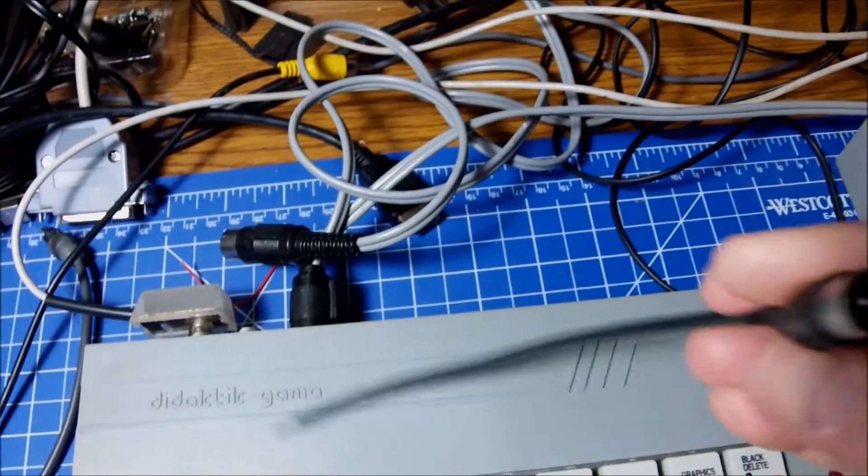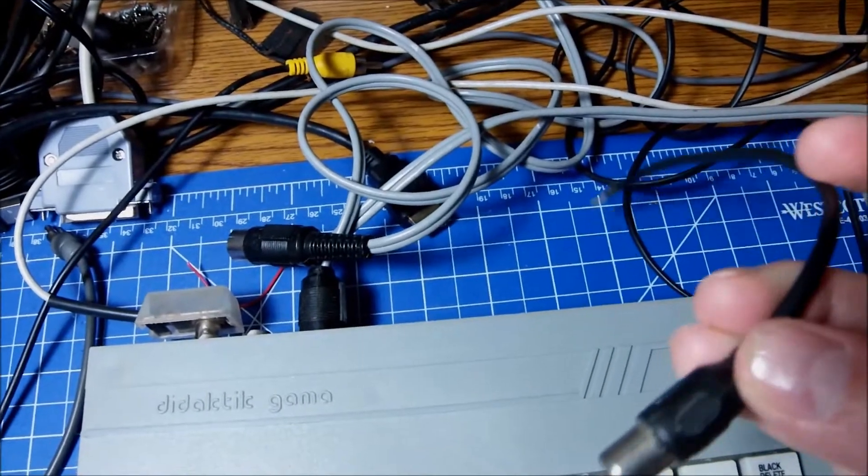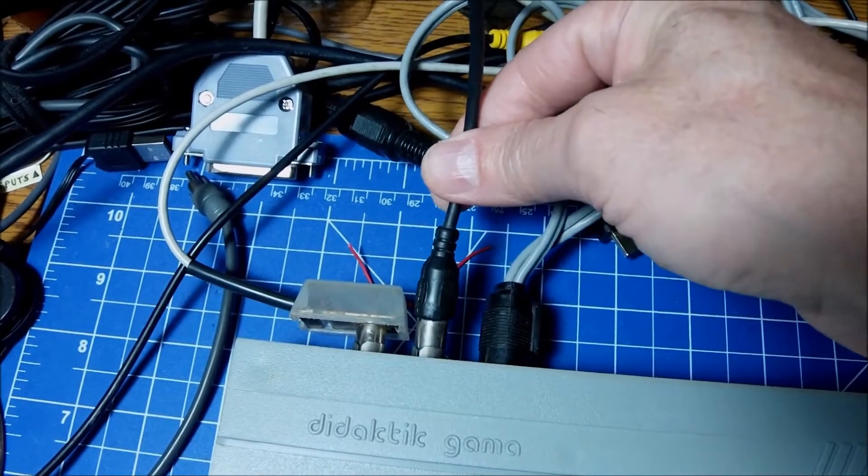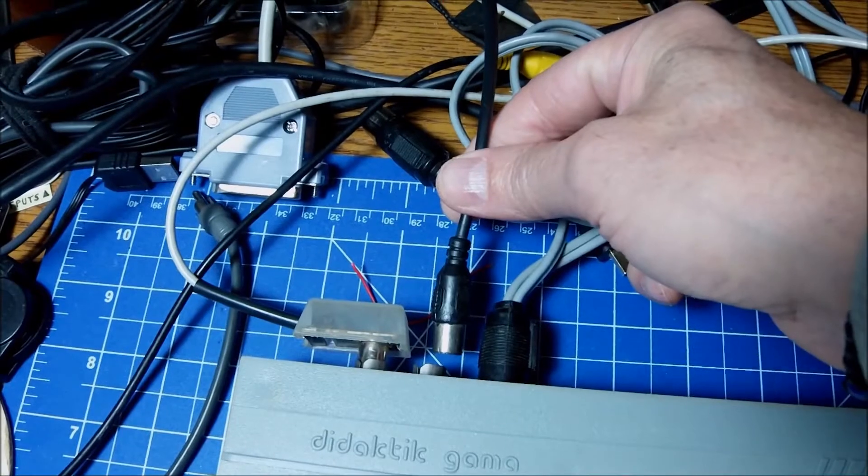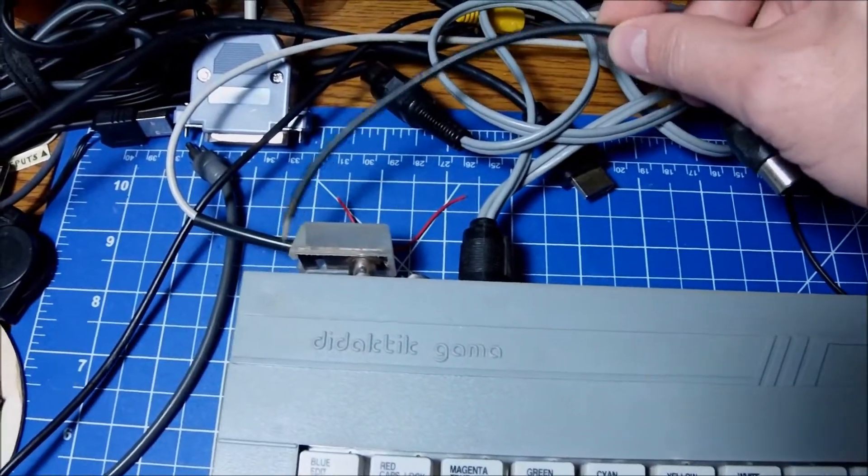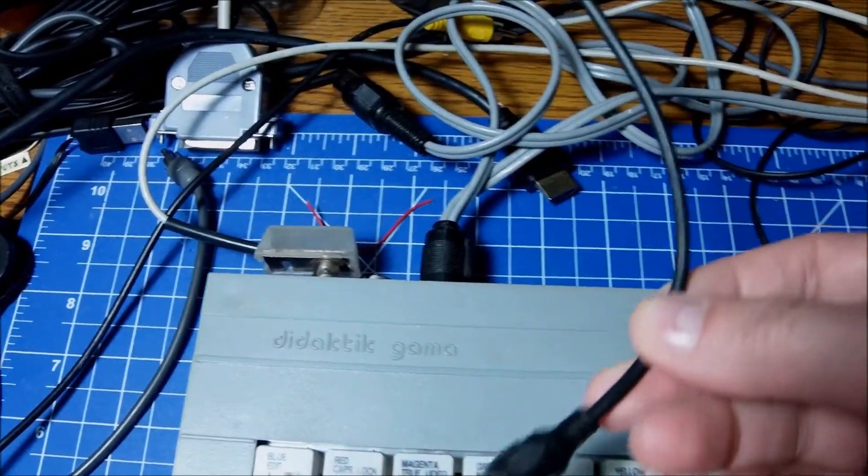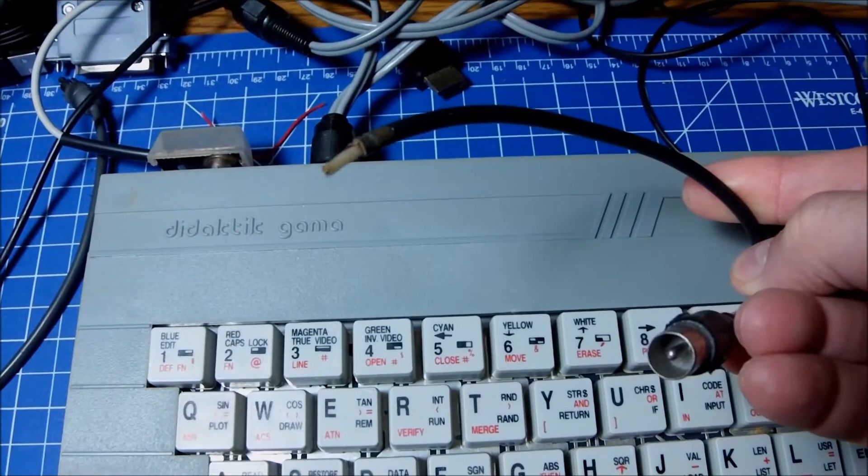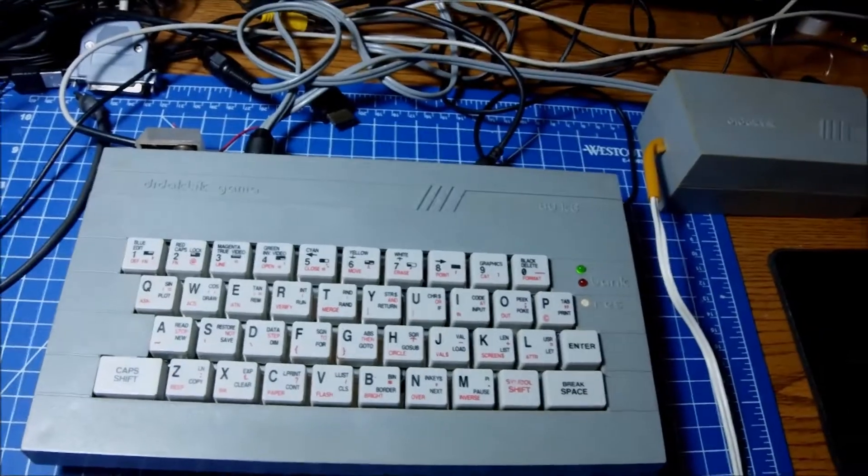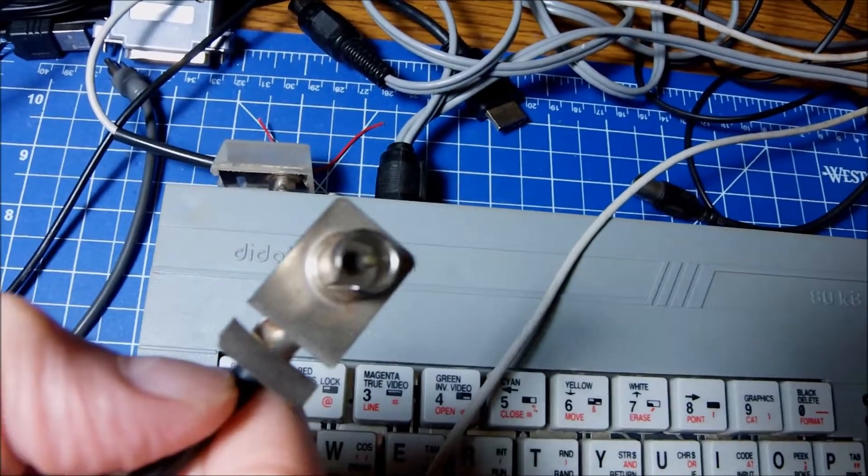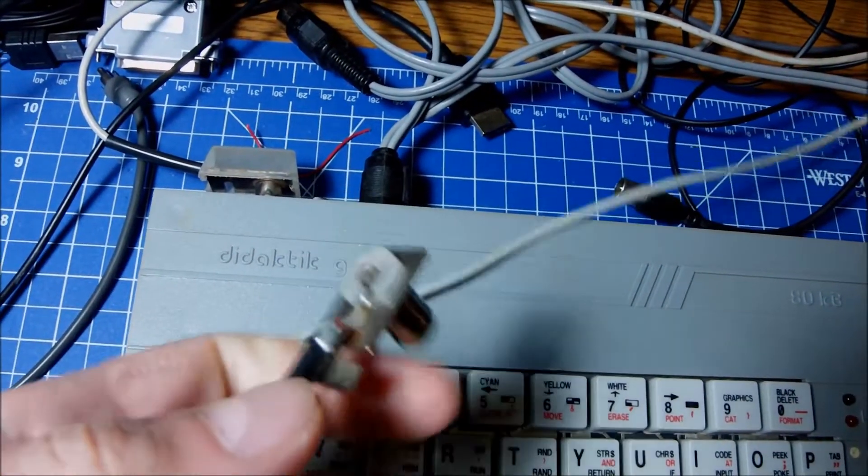There is a well-placed reset button so you cannot accidentally hit it. I found this part like the RF cable in my spares, but I don't think I can put it in there to make a conversion and get a new cable. So I can build one, get rid of the RF cable and use the monitor instead, the video input on the back of my TV. I want to make a clear picture so we can go over the technical details and the story behind the Didactic Gamma.